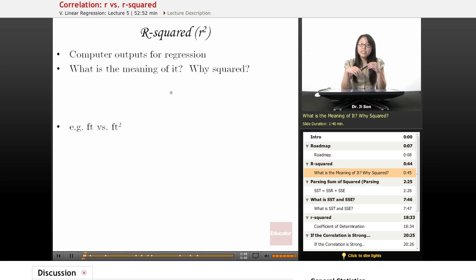All right. So one of the reasons why practically you'll need to understand what r squared is is that often when you do a regression on the computer, either in SPSS or Stata or any of those statistics packages, they will often give you r squared as one of the outputs. And you might be looking at it and be like, why are they giving me r squared? And so we want to know, what is the meaning of it?